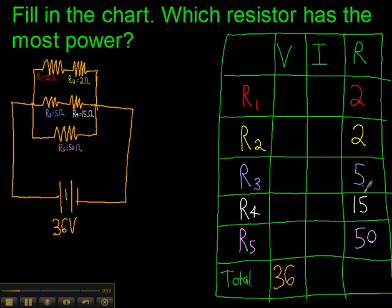Anytime you know all of the stuff in either a column or row except for one thing, you can actually fill in the missing thing. For the most part, the way that you'll do that is using Ohm's law.